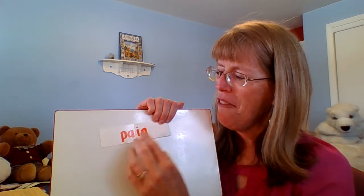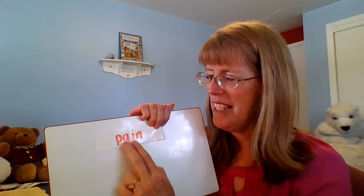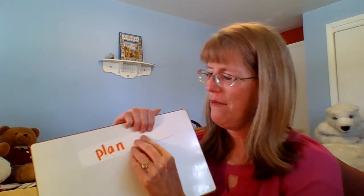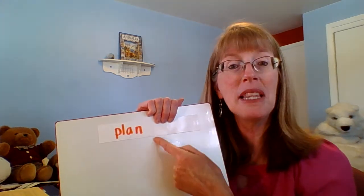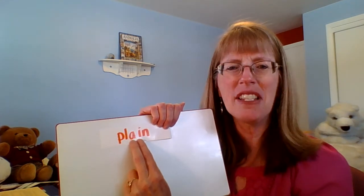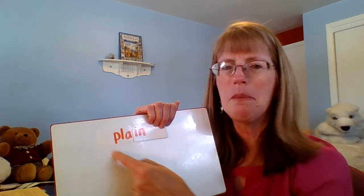Pan. When we put the vowel team together, it says A, and the word is pain. Pan to pain. Plan. With the A-I together, the sound is A. The word becomes plain.